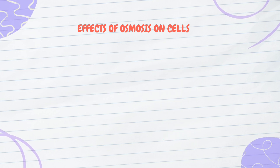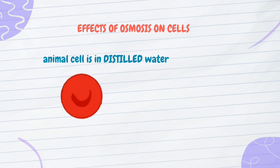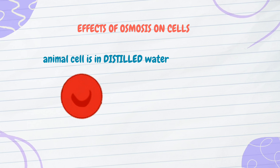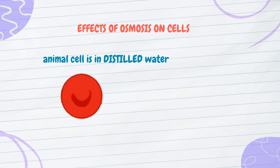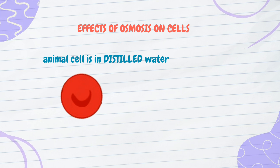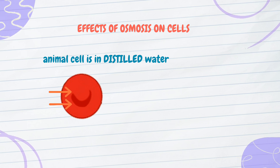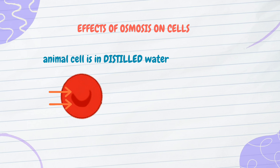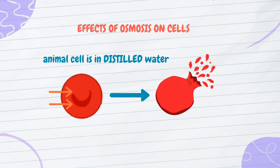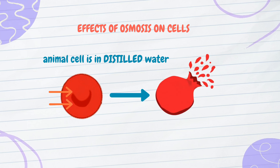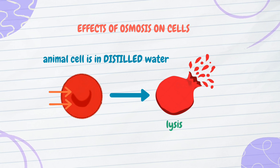What happens when an animal cell is in distilled water? Distilled water is a hypotonic solution — it has a lower solute concentration than the cytoplasm. When an animal cell is placed in distilled water, water molecules move into the cell. The more water enters the cell, the more the cell expands. The animal cell eventually bursts, as it has no cell wall to prevent overexpansion. The bursting of the cell is called lysis.